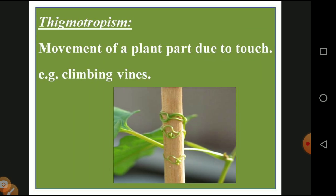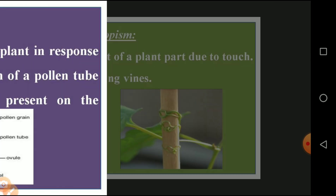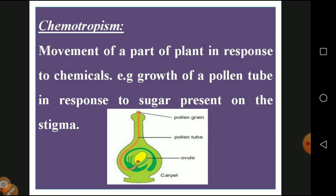Thigmotropism is the movement of a plant part due to touch or climbing. Examples include climbers like pumpkin, bitter gourd, and snake gourd — these plants have tendrils that penetrate a supporting substance, called climbing vines. Chemotropism involves movement in response to a chemical stimulus. Example: growth of pollen tube in response to sugar present in the stigma. Honeybees are attracted to pollen grains because of the high sugar content, and the pollen tube responds to sugar in the stigma.